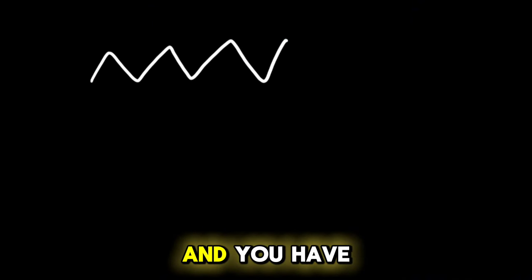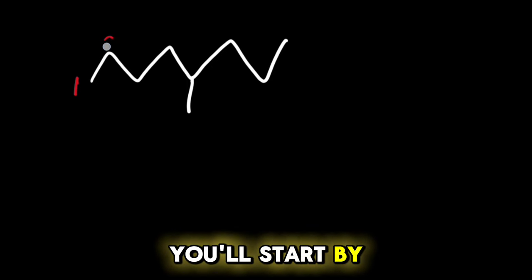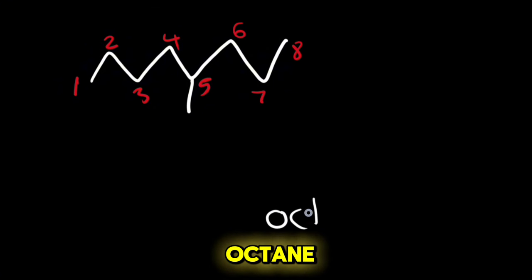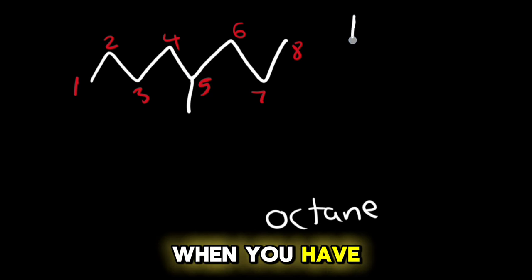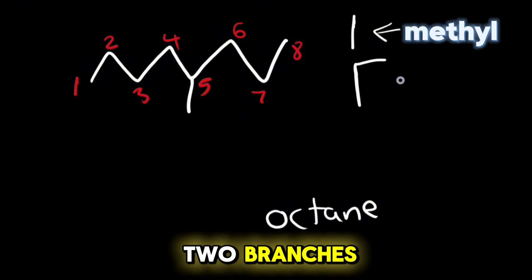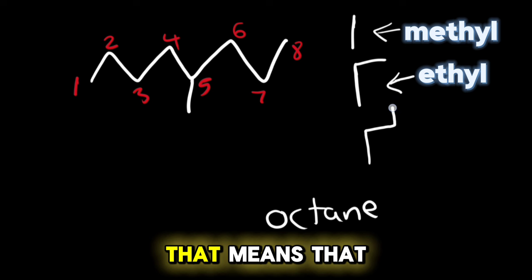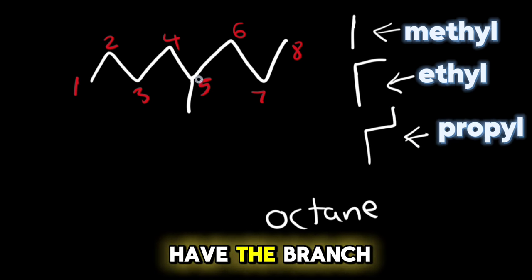Let's say you have the same octane and you have a branch right over here. How can you name it? You'll start by writing the numbers one, two, three, four, five, six, seven, eight. This means that this will be octane, but we have a branch over here. When you have one branch, this means methyl. When you have two branches, this means ethyl. When you have three branches, this means propyl, and so on. We can see here that we have the branch at number five.